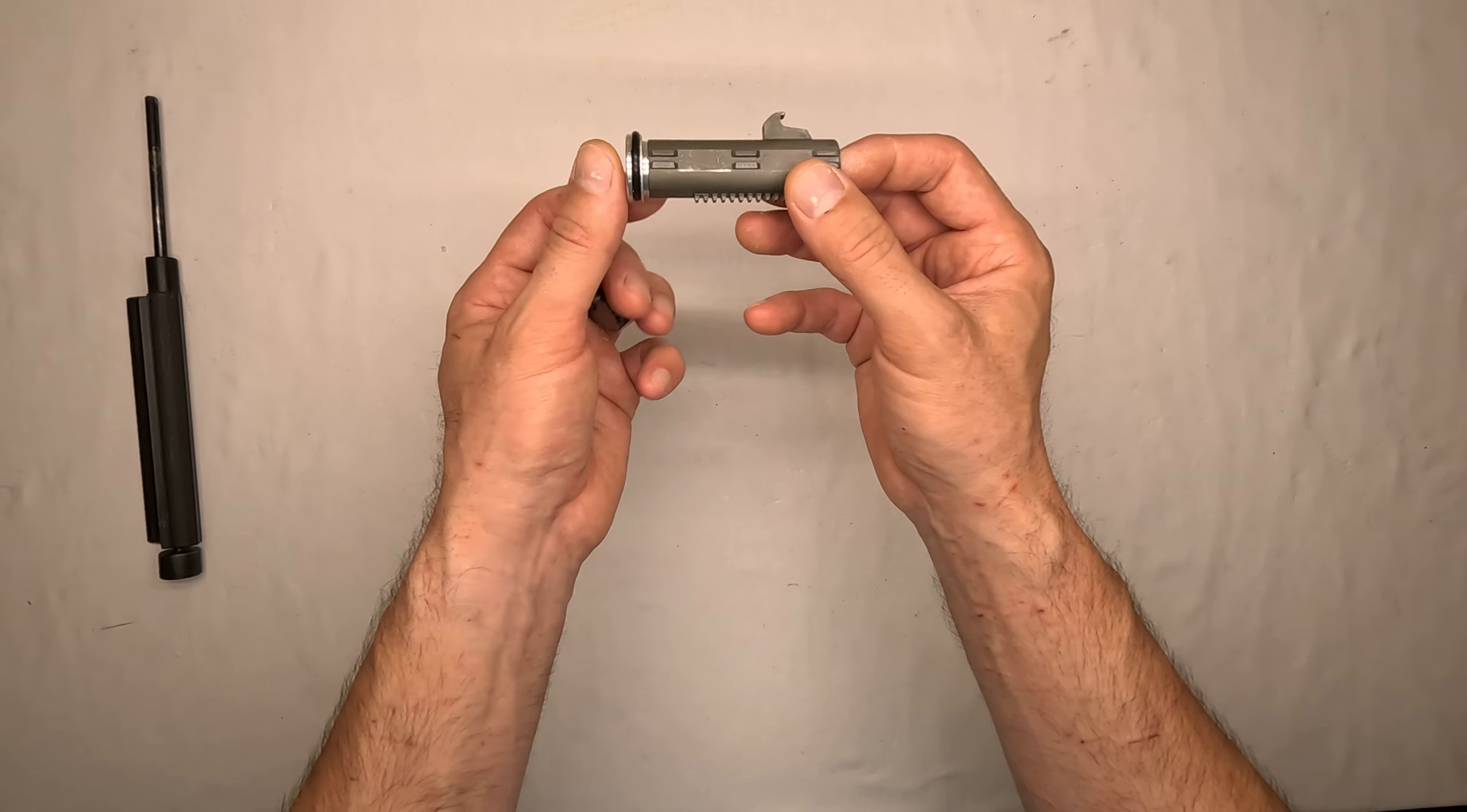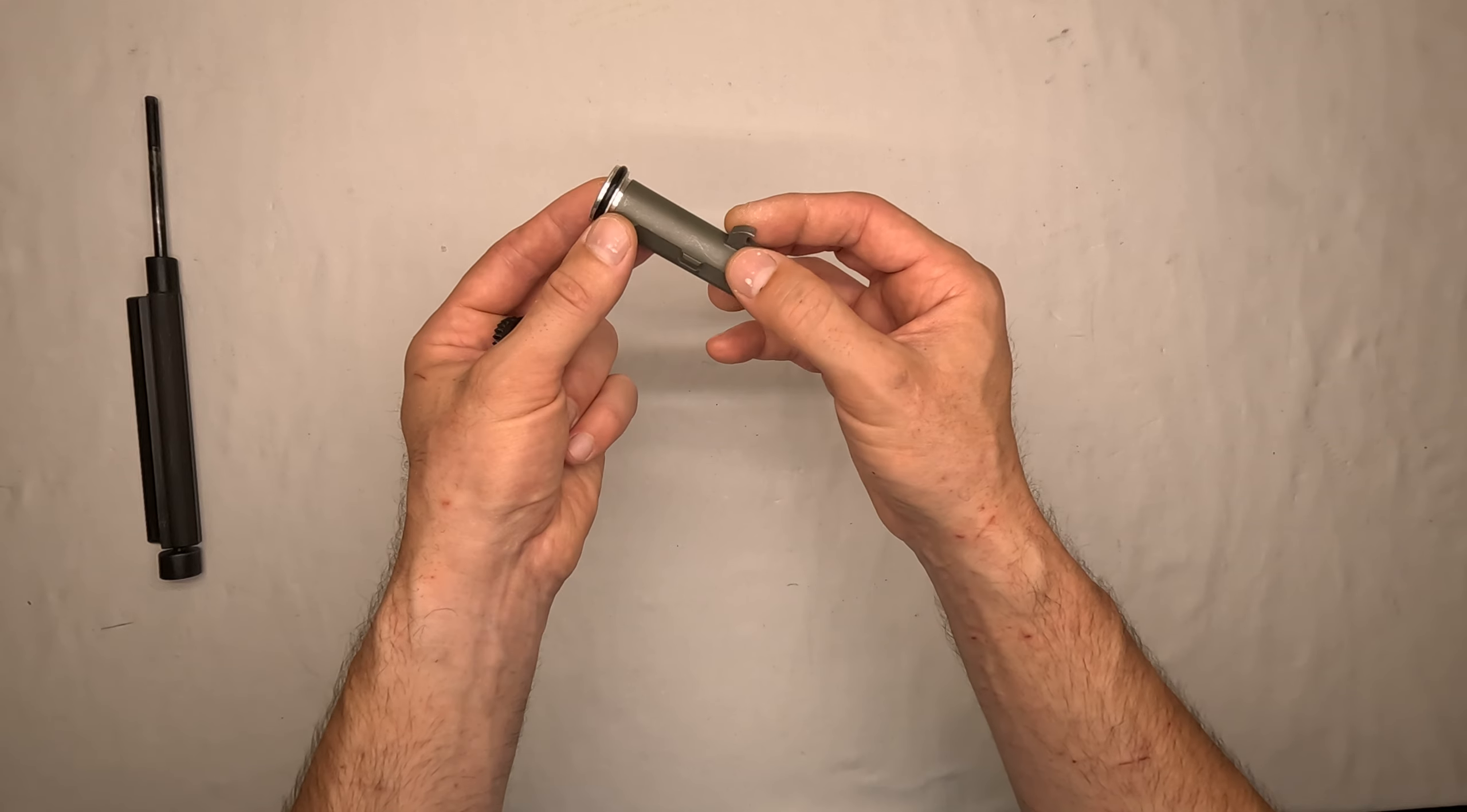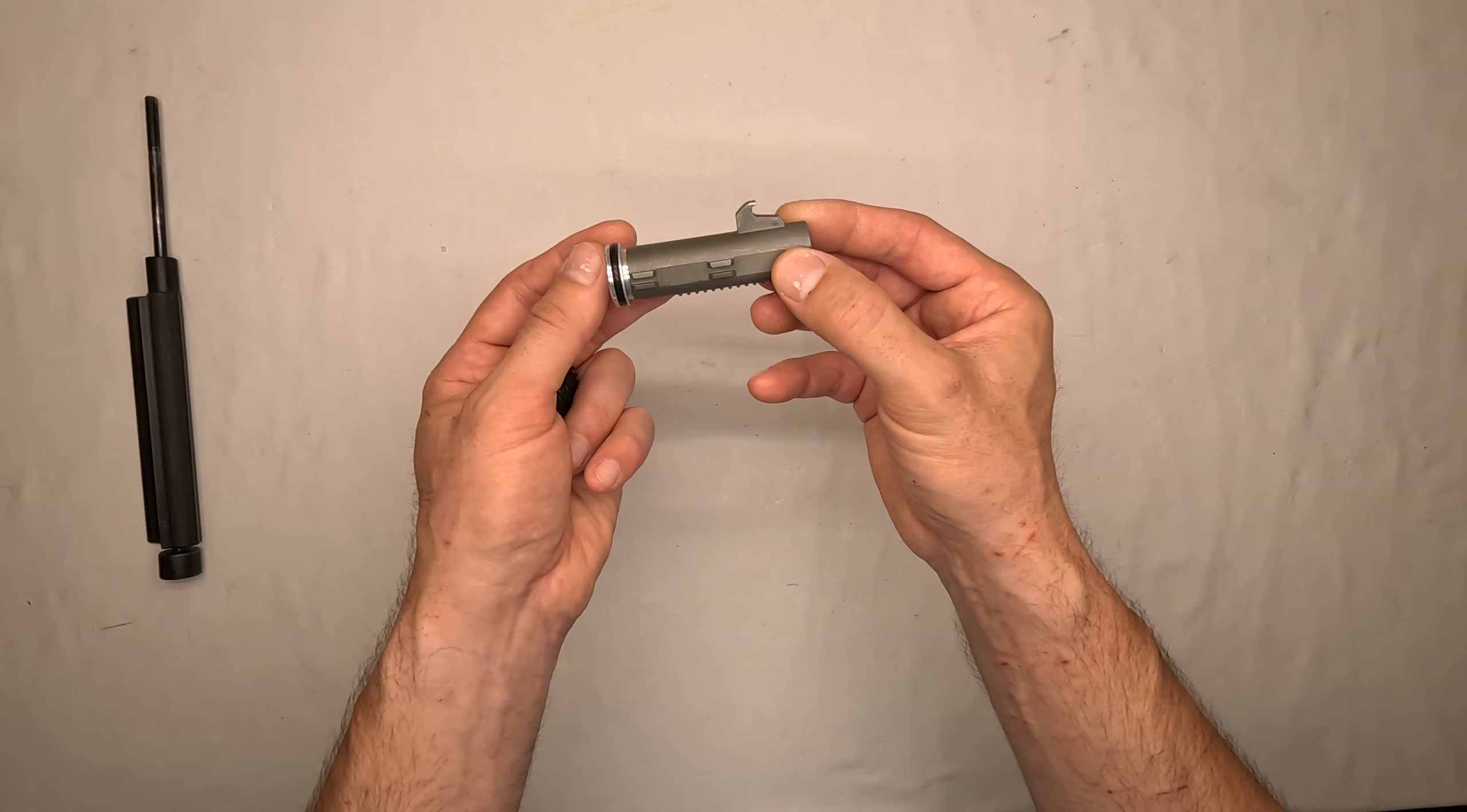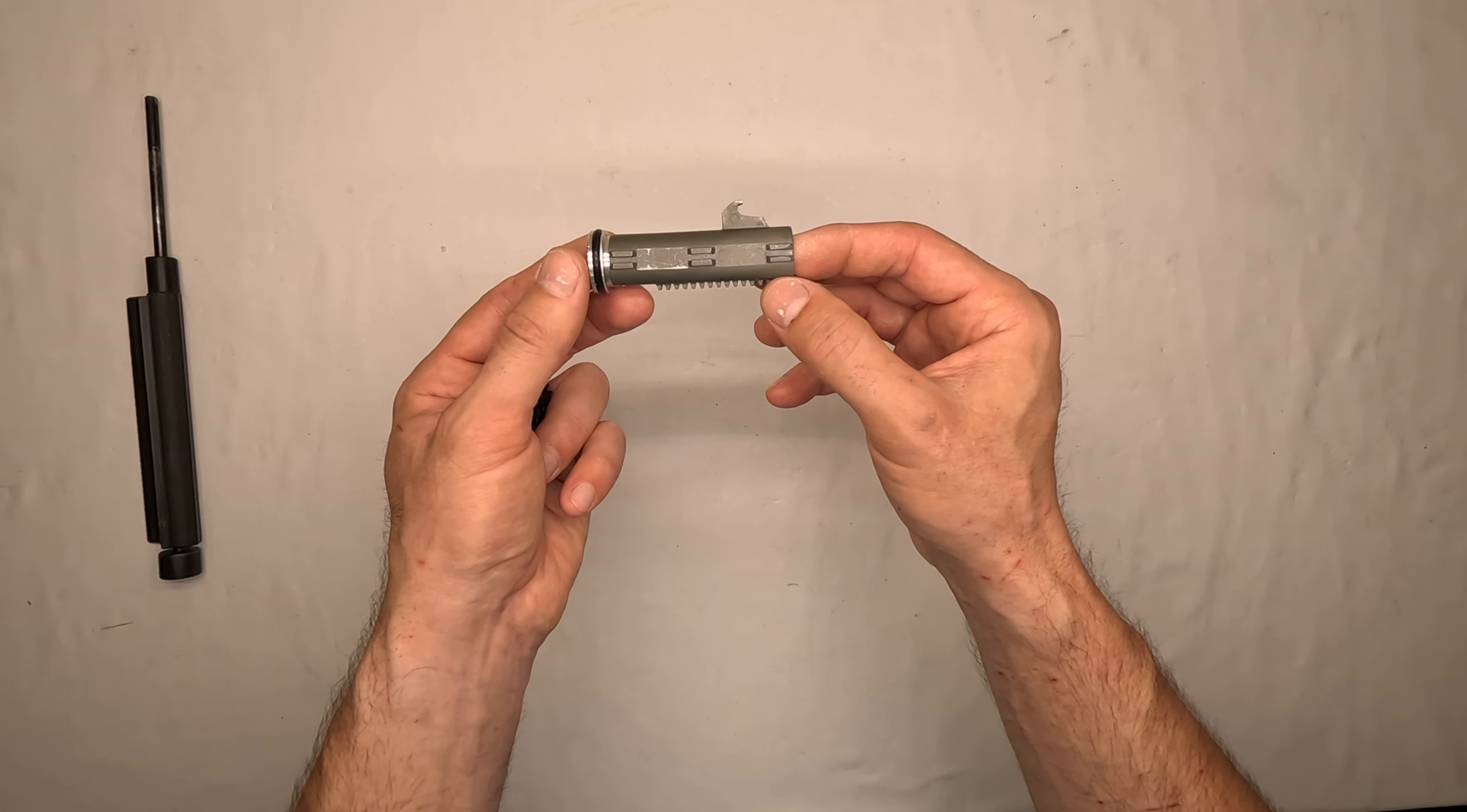This is the piston, all metal. See this shark fin? It pulls back the bolt. It weighs 74 grams. That's like half again of a standard heavy piston with a piston head.